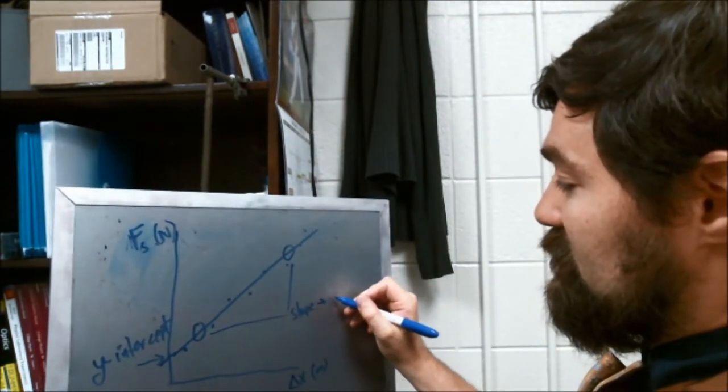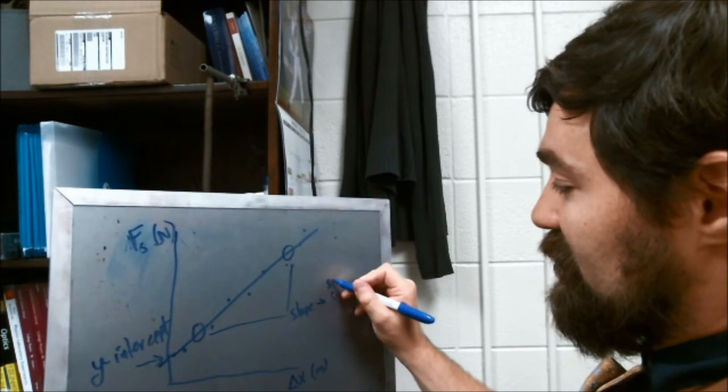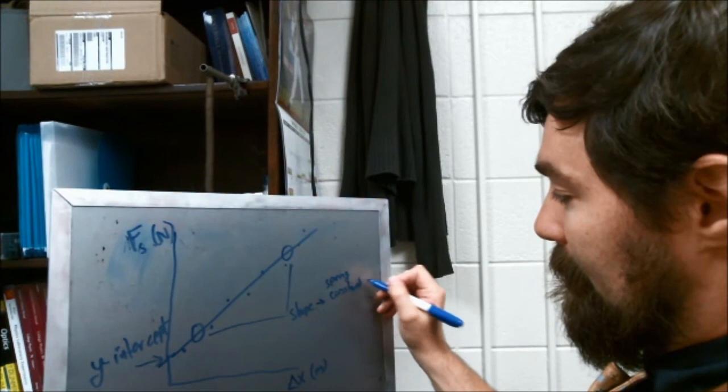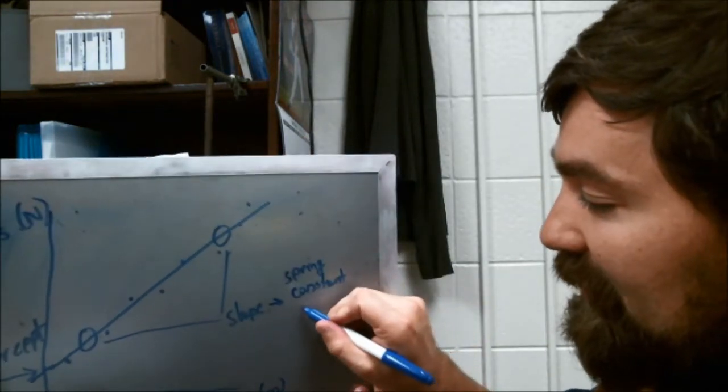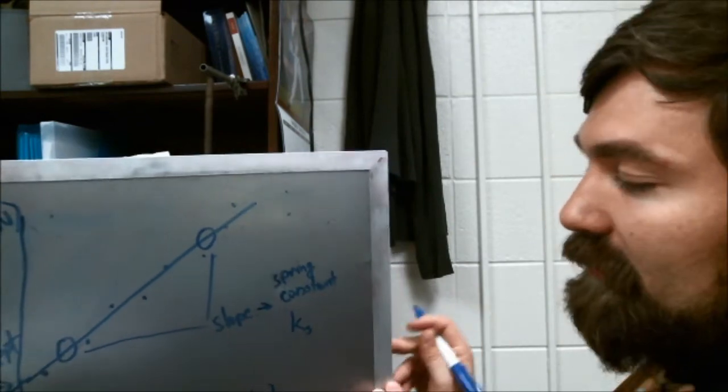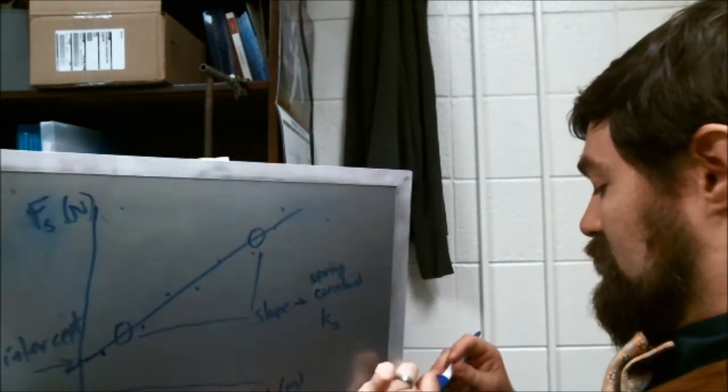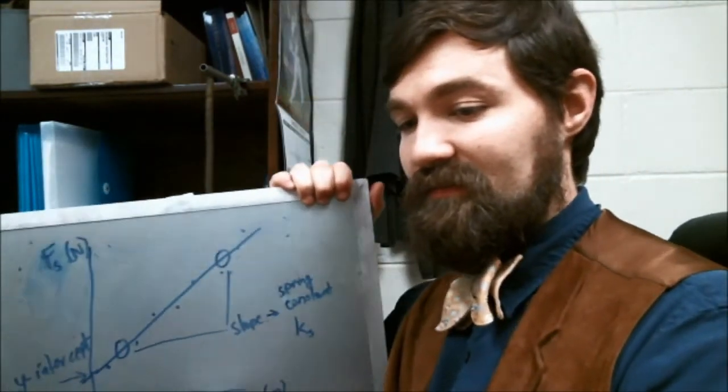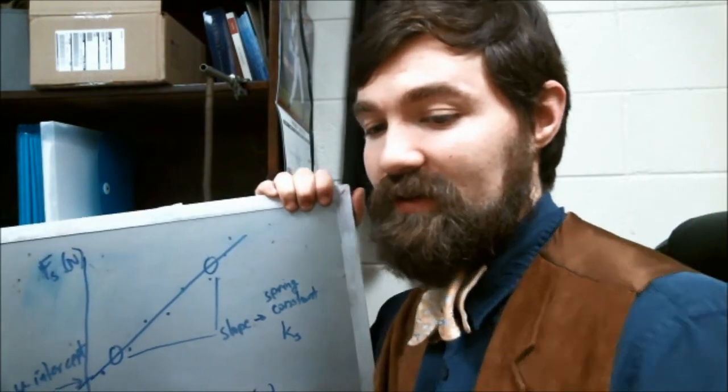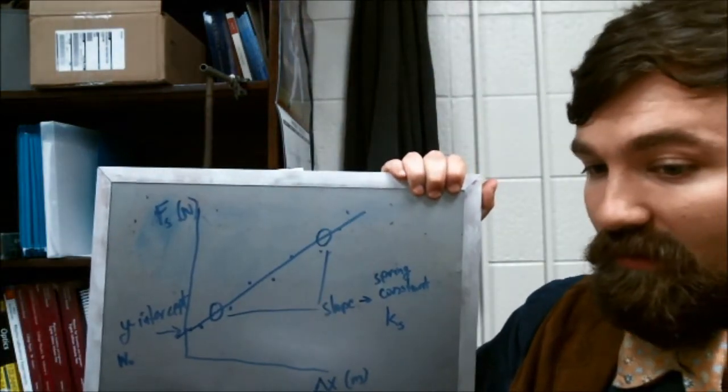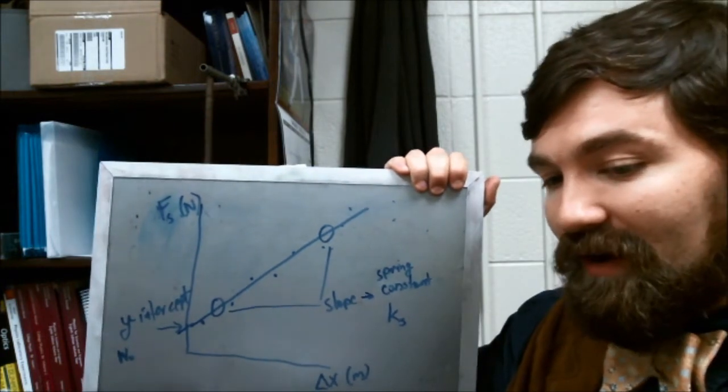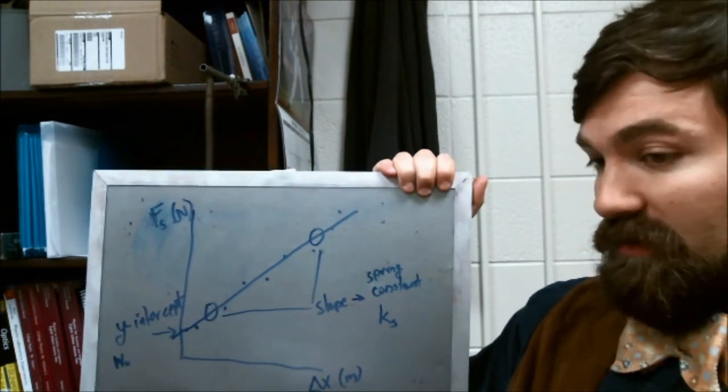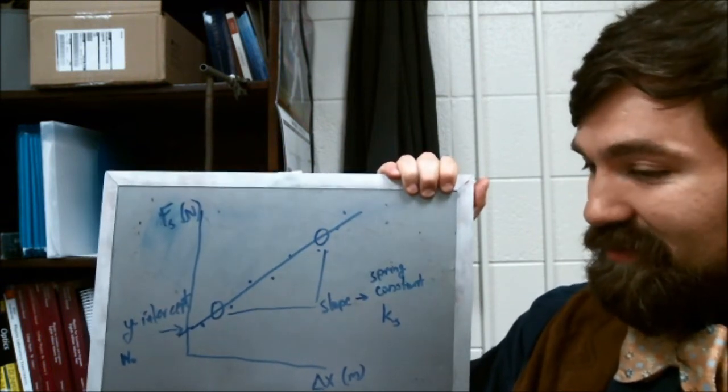The slope gives you the spring constant, which is represented by k or ks for spring. So that should be a run-through of basically the lab itself. You're asked then to write a one paragraph conclusion and summary of what you've done. This pretty well covers most of the lab.